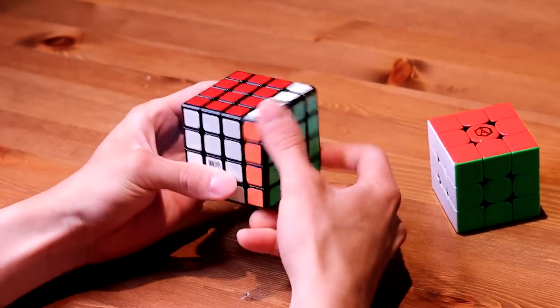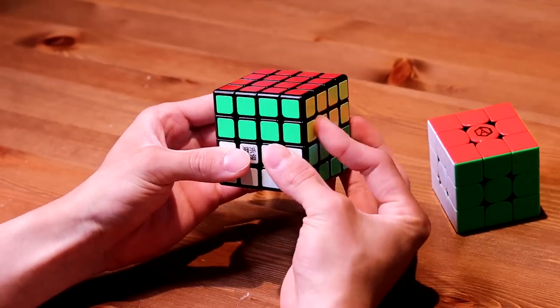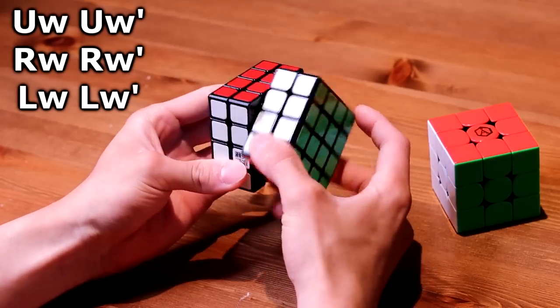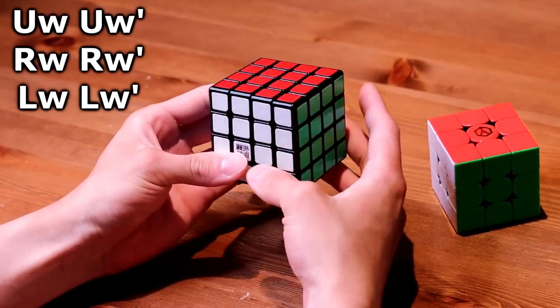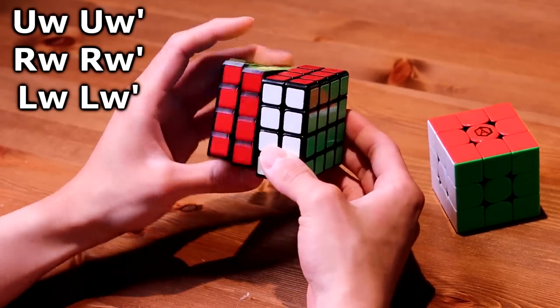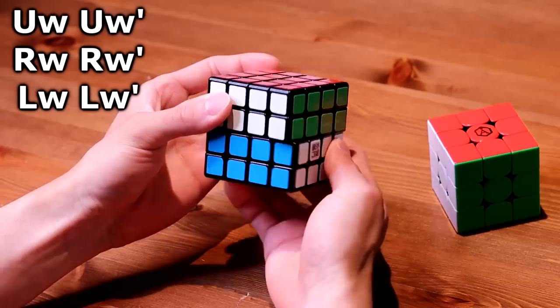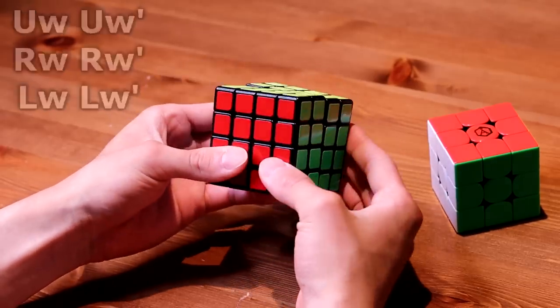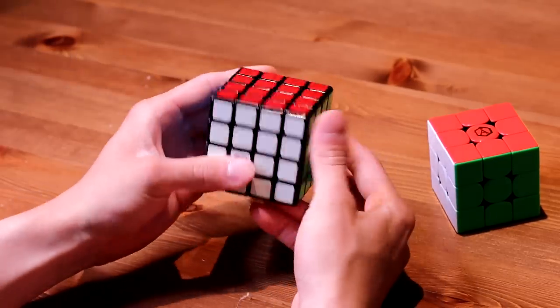U, U', R, R', you have this Uw which turns two layers. So Uw, Uw', Rw, Rw', Lw, Lw', and etc. So you turn two layers if there is a W following the notation.